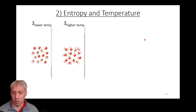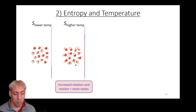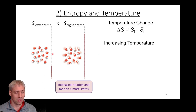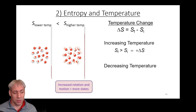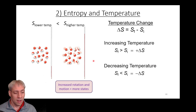Thinking about temperature — this one makes sense somewhat intuitively. At lower temperatures, molecules are moving slowly; at higher temperatures, molecules are moving more quickly. The higher the temperature, the more motion, rotation, and vibration, and the more ways the system can exist — so higher temperature means higher entropy. If we increase temperature, we go from low S to high S, giving a positive ΔS. If we decrease temperature, we go from high entropy to low entropy, giving a negative ΔS. The warmer it is, the more entropy; heating up gives a positive ΔS and cooling down gives a negative ΔS.